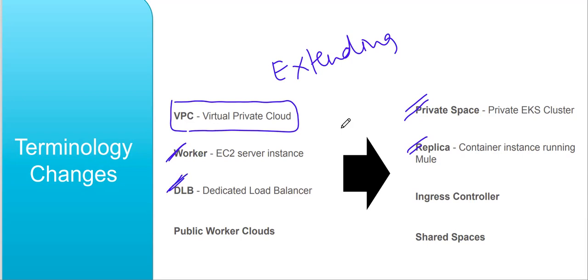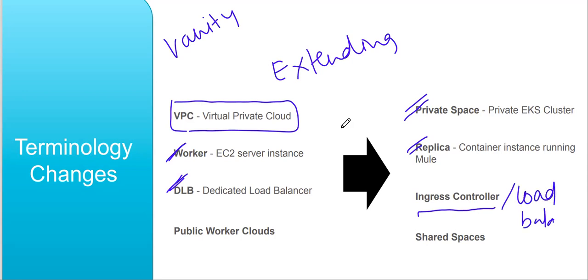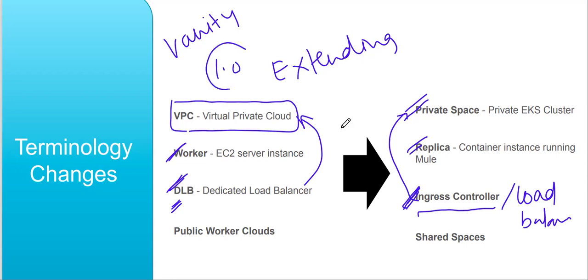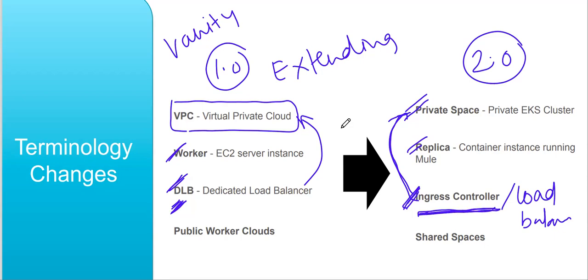If you want to use vanity URLs or upload custom domain certificates, we need a dedicated load balancer in CloudHub 1.0. In CloudHub 2.0, we get an ingress controller or load balancer associated with the private space. The DLB is an optional component in CloudHub 1.0, but the ingress load balancer is a compulsory component in CloudHub 2.0. In 1.0 we can bypass the DLB and directly trigger the Mule worker, but in 2.0 we must go via the ingress load balancer.